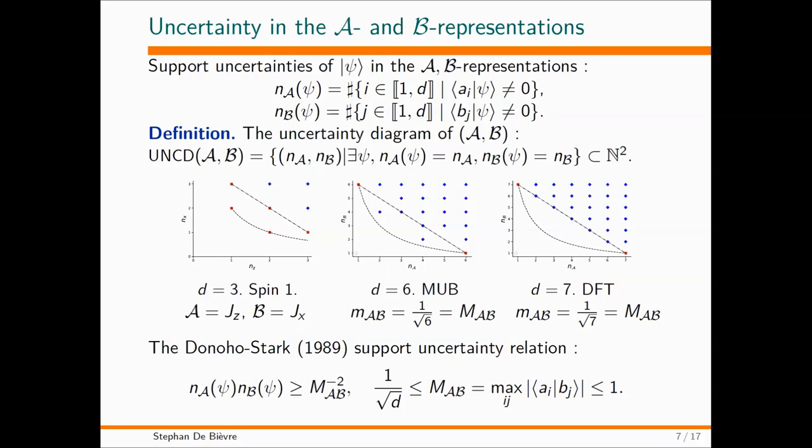Now, the first thing I will look at: there were three words—uncertainty, incompatibility, non-classicality. Let's start with uncertainty. Once you have this setting, you can define the A uncertainty of the vector Psi, which is just the number of non-zero basis coefficients on the basis A, and the same for B. So you have a vector in C^d which you constructed from your abstract vector Psi, and it has some zero coefficients and some non-zero. You count the non-zero ones and call it n_A. I call this the A support of Psi. Then I have the B support of Psi. Now I can make a little picture. This is the n_A axis and the n_B axis. Where there is a dot, it means there exists a state Psi which has this value for n_A and that value for n_B.